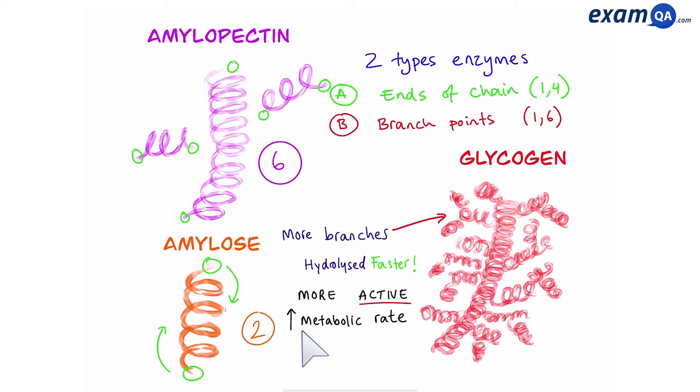Okay so because they have a higher metabolic rate that means they need a rapid glucose supply, so it makes sense that glycogen is much more branched so it can be broken down faster and give a rapid glucose supply to the animal.